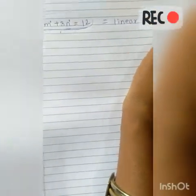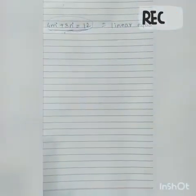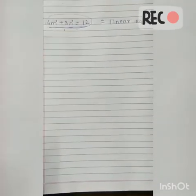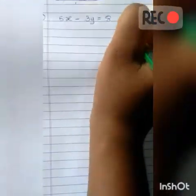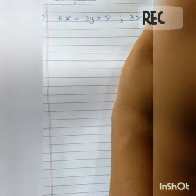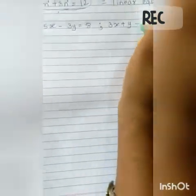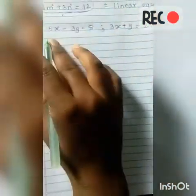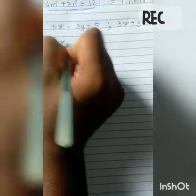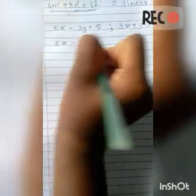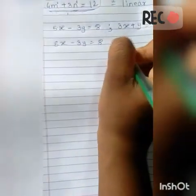Now we solve some examples. The system of equations we solve is: 5x − 3y = 8, and 3x + y = 2. The first equation is 5x − 3y = 8, and the second equation is 3x + y = 2.